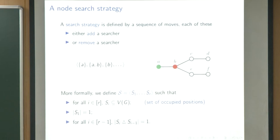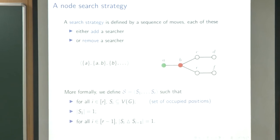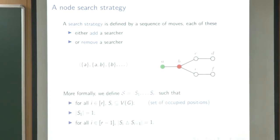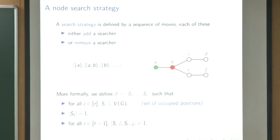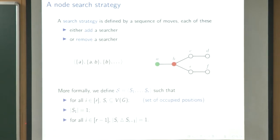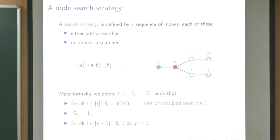The idea is that when we do this, we know there couldn't be a robber at A because we just were there, and once we move to the next vertex and remove the cop from A, the robber still couldn't get to A. Formally, the search strategy is just a sequence of sets of vertices. For every move we have a new set, initially of size 1, and we can start anywhere. Since we either add 1 or remove 1, the symmetric difference between consecutive sets is exactly 1.